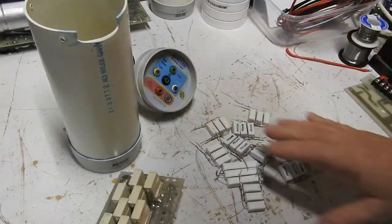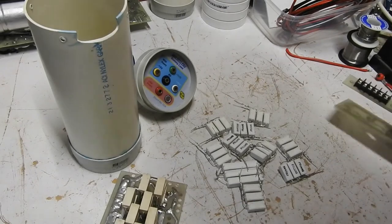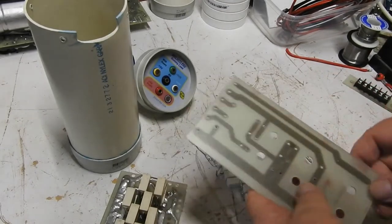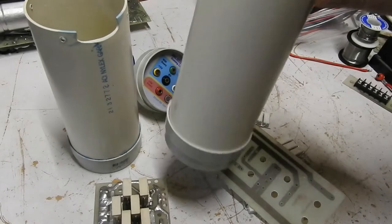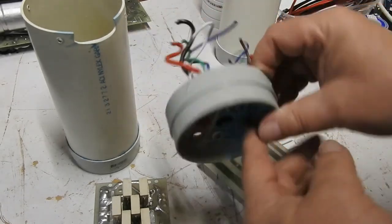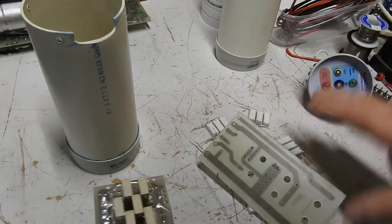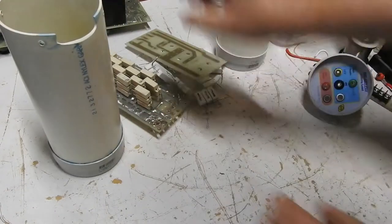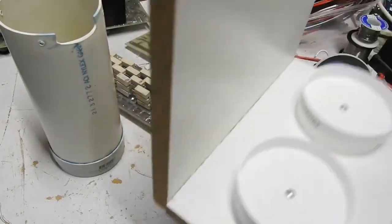These are the other resistors that are required and they're going to go onto this circuit board, which will go into a second cylinder.